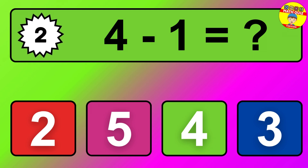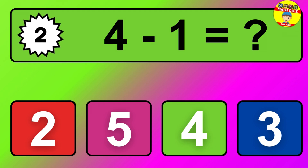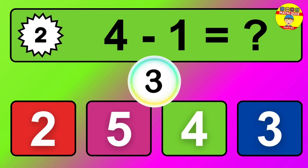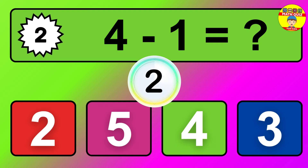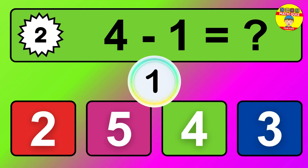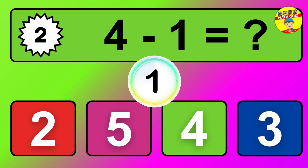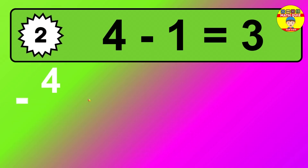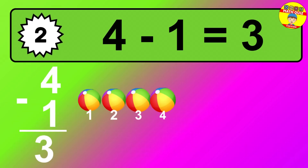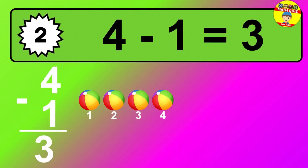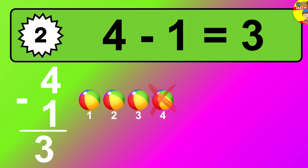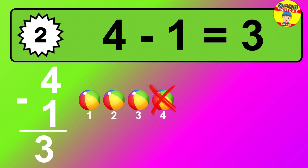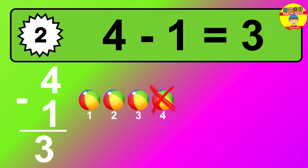Question 2. 4 minus 1 equals what? The answer is 4 minus 1 is 3. Let's count it: 1, 2, 3.